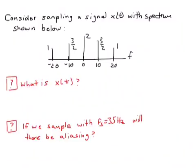We're going to consider sampling a signal, x of t, that has this spectrum shown here. So the first job that we have is to figure out what is the signal, the time signal, x of t, look like?